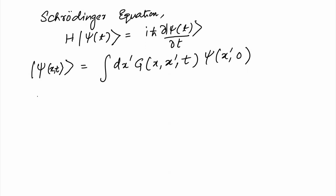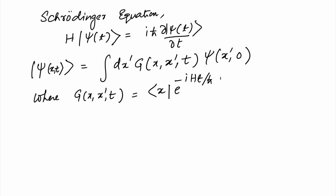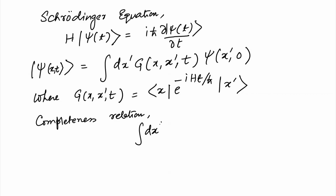The Green's function G(x, x', t) is equal to the matrix element ⟨x| e^{−iHt/ℏ} |x'⟩, and this comes from the completeness relation of the wave functions: ∫ dx' |x'⟩⟨x'| = 1. So the wave function at a given space-time point can be calculated starting from ψ(x', 0), where x' is a dummy variable and all x' values are being summed over. We have introduced this concept earlier, so I will skip here.